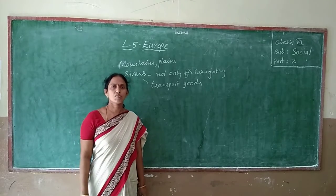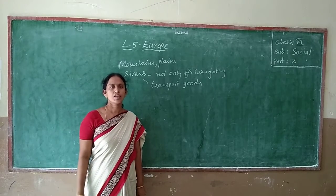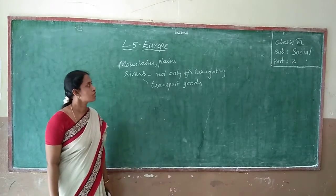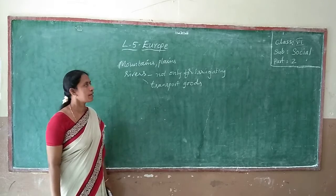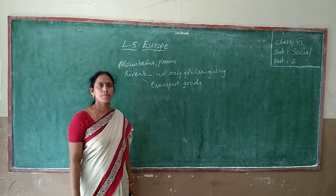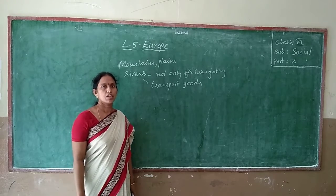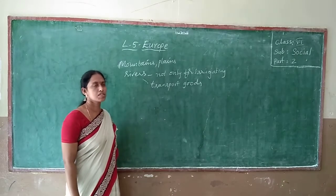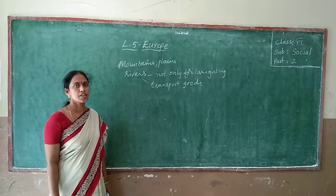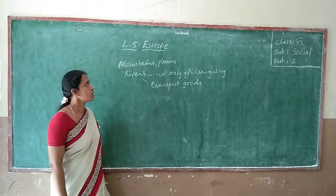Children, which lesson are we learning? Lesson 5, Europe. Okay, now I explained about mountains and plains. In this class, now I am going to explain about rivers.